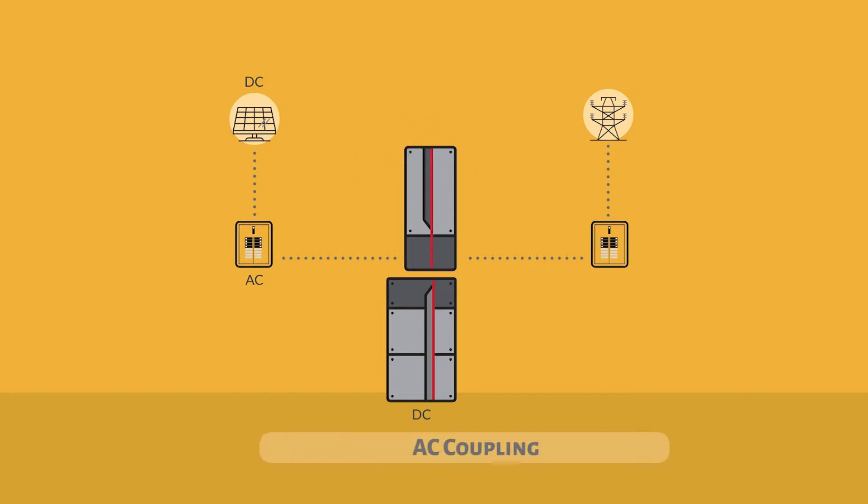AC coupling is a common practice to retrofit an energy storage system to an existing grid type system. It is considered AC coupling as the DC output of the solar array is converted to AC, then coupled to an energy storage system that converts the AC back to DC for storage in a battery bank.